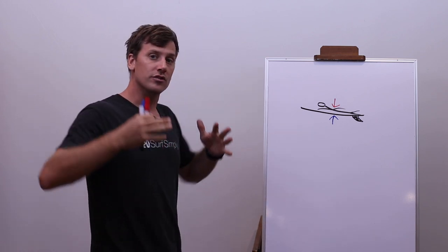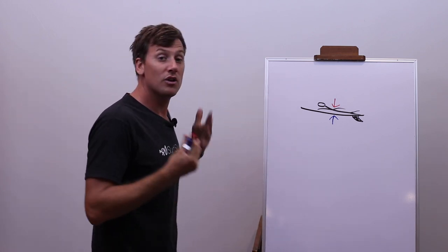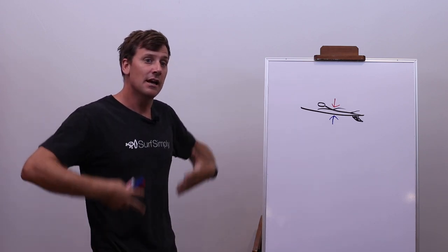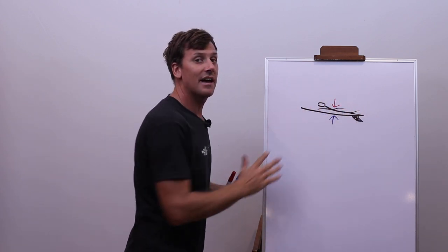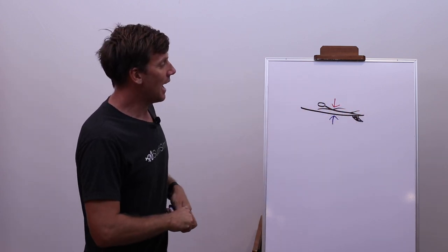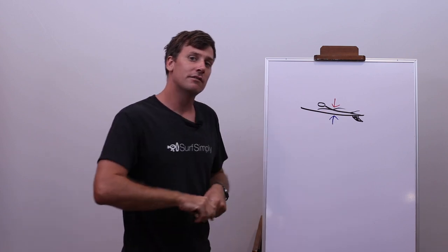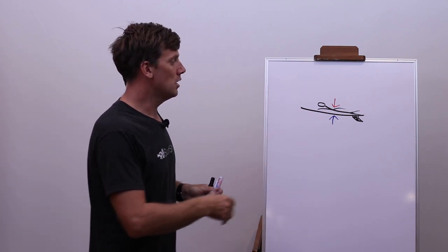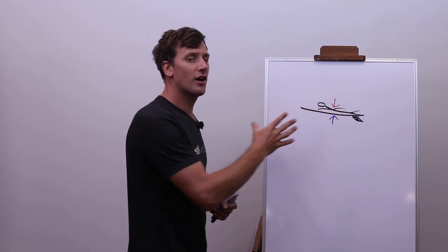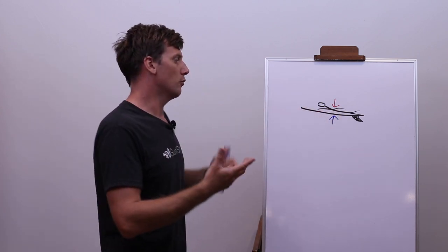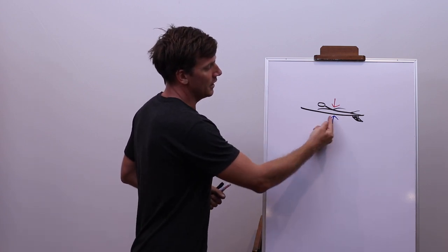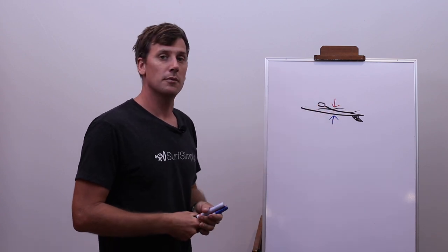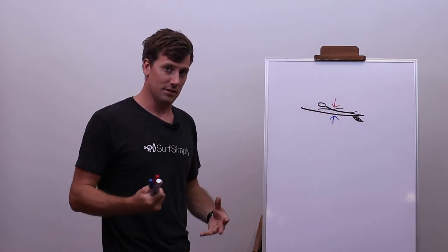Now, the tricky part here is that it's going to be very different for every person and every board. The center of weight is going to be very dependent on how we're shaped. Some people carry a little bit more weight in the shoulders, some people carry more in their hips, and it's going to move that center of weight up and down the body.